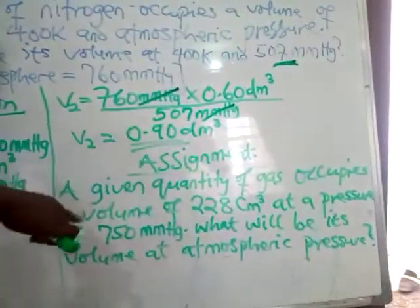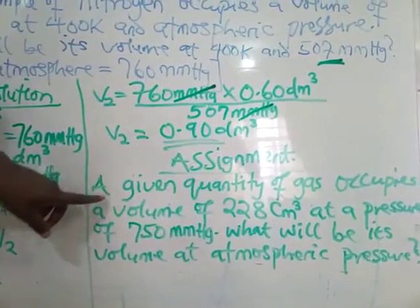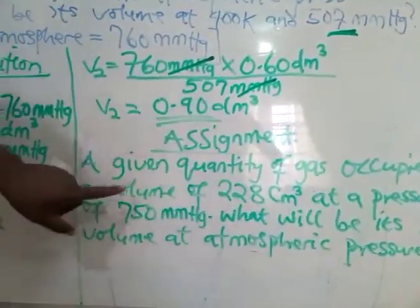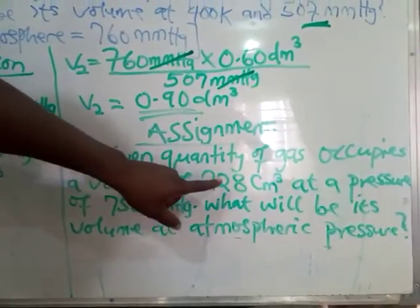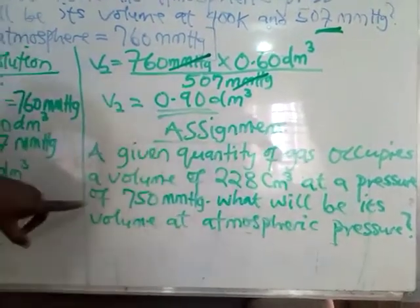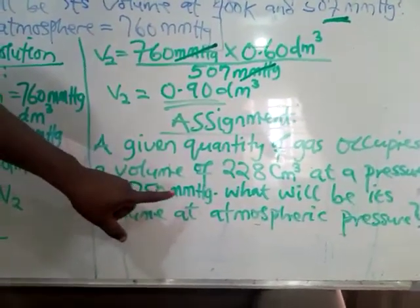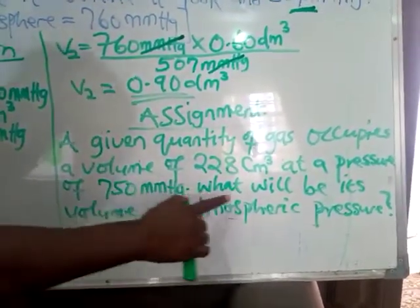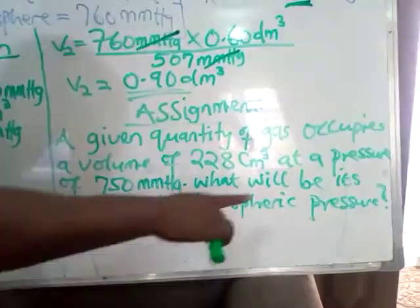As an assignment, please try this question: A given quantity of gas occupies a volume of 228 cm³ at a pressure of 750 millimeter mercury. What will be its volume at atmospheric pressure? From the explanation given, you should be able to solve the assignment. Also consult your textbooks for other examples to help you answer problems like this. Thank you very much.